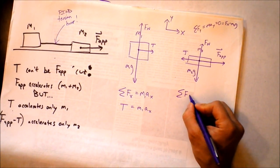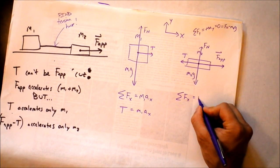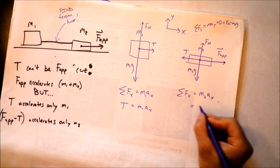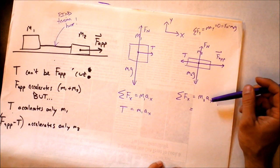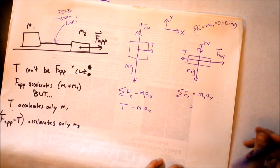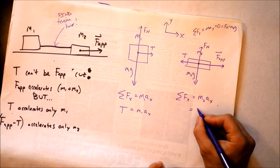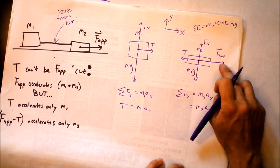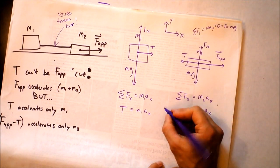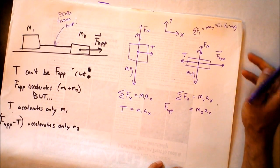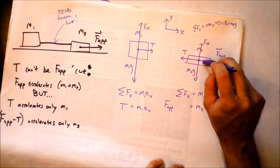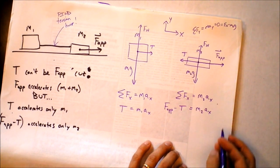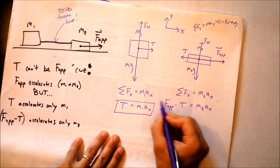For M2 in the x direction, the net force equals M2 times acceleration. The net force is the applied force acting to the right — that's positive — minus the tension, because on box 2 the tension pulls it to the left. So: F_applied minus T = M2 * a_x. Now we have two equations.